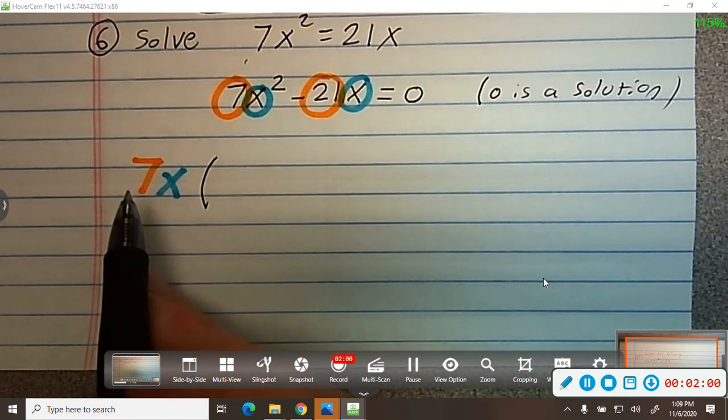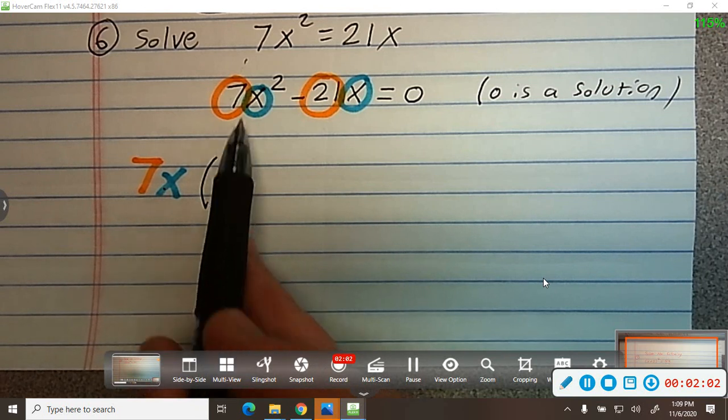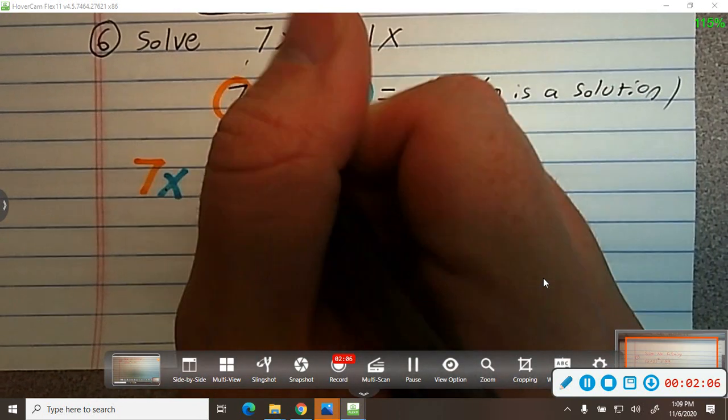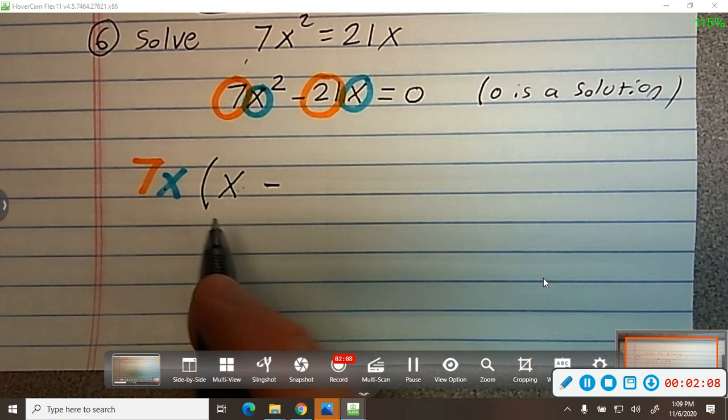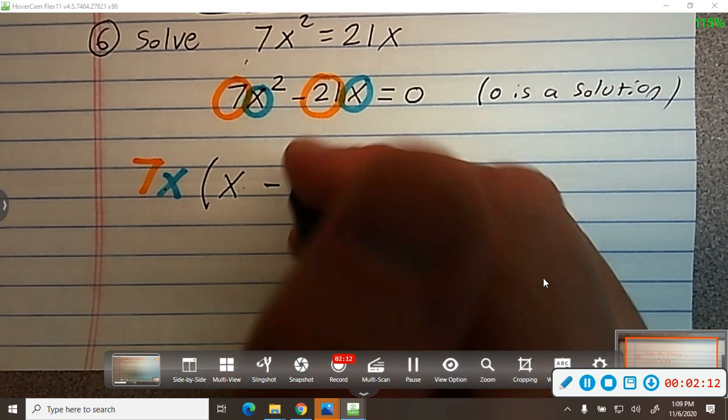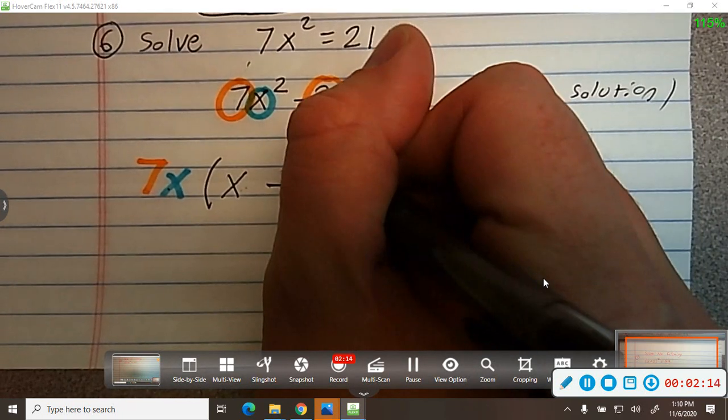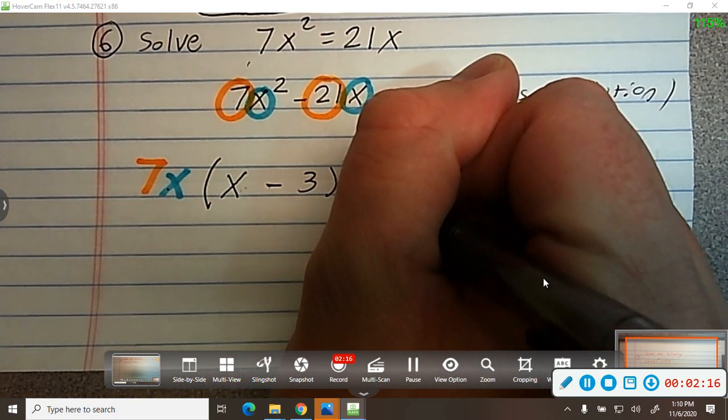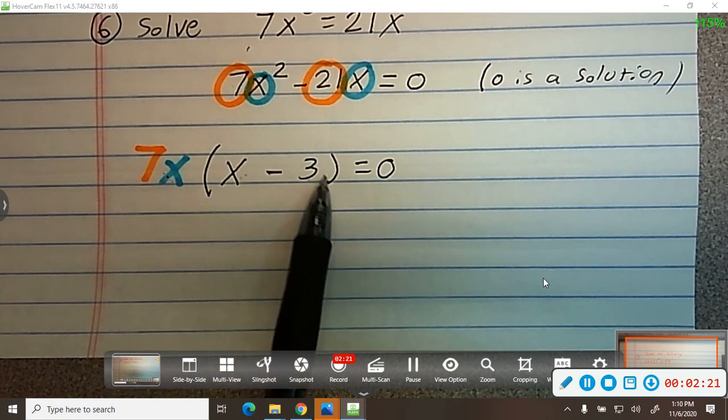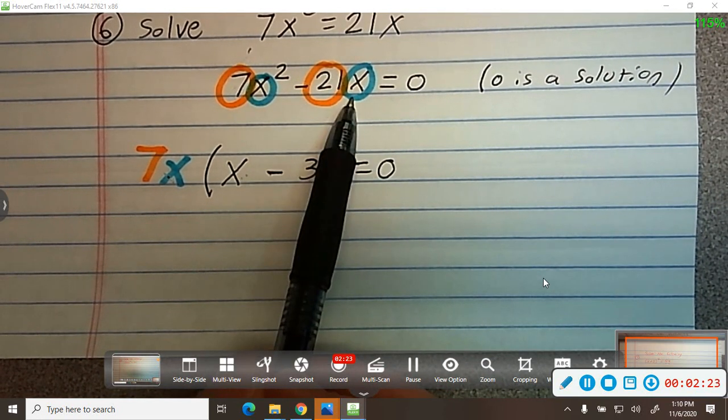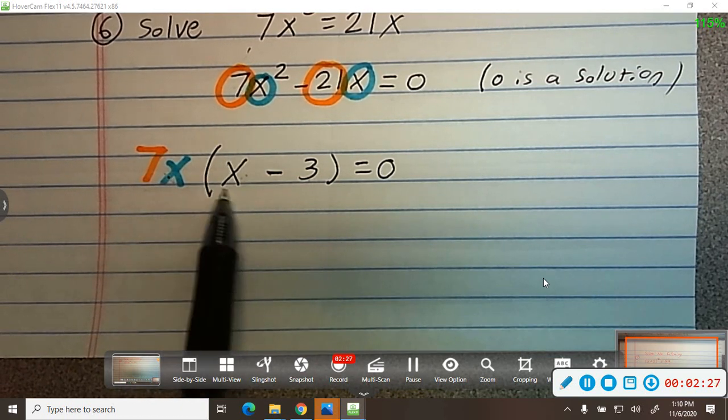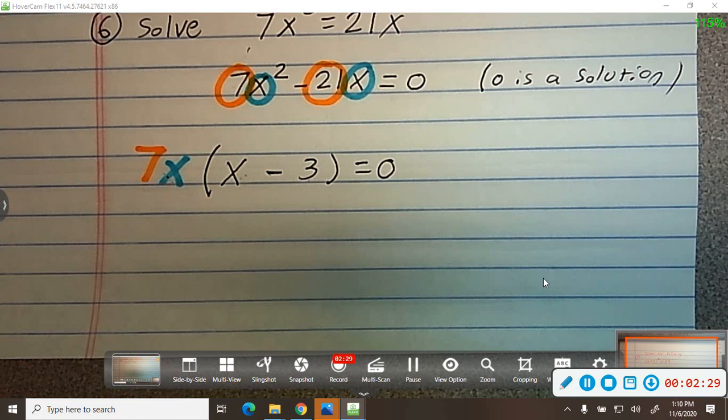So what's left over, 7x times what is 7x squared? You just need one x. 7x times what is 21x would be 3. This is much easier to find the solutions. This not so much. Because this is called a linear factor. This is a linear factor. This is a linear factor. And lines are easier to work with.